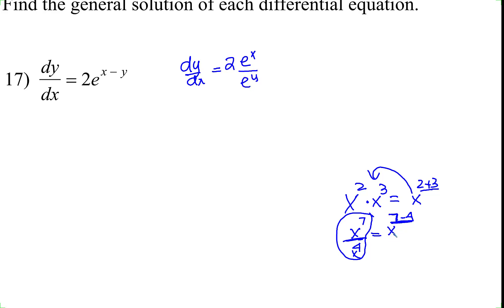So what we did there: x to the 7th divided by x to the 4th equals x to the 7 minus 4. So if you have x to the 7 minus 4, you can go backwards and write it as x to the 7th divided by x to the 4th. That's all we did here: e^x divided by e^y.